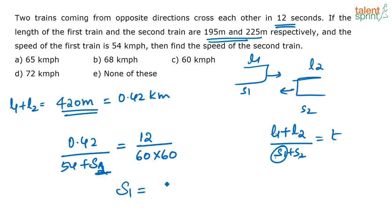When you solve this you get S1 equal to 72 kilometers per hour. So that is the answer that you are looking at - that is option D.